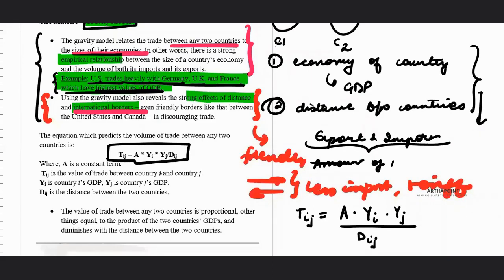So this is how it is. A is any constant. Tij is the value of trade between country I and J. YI is country I's GDP. YJ is country J's GDP. And Dij is the distance between two countries I and J.